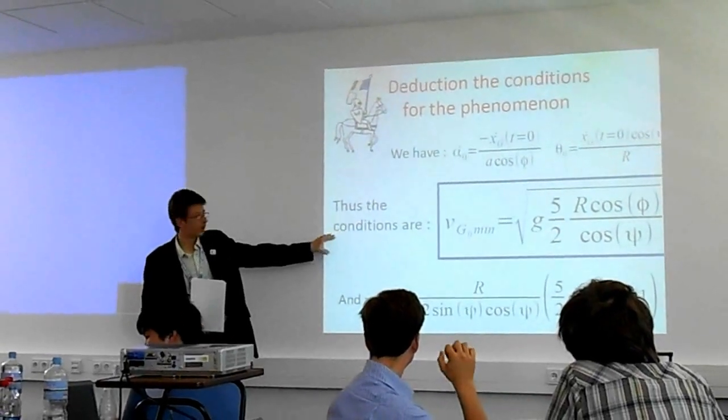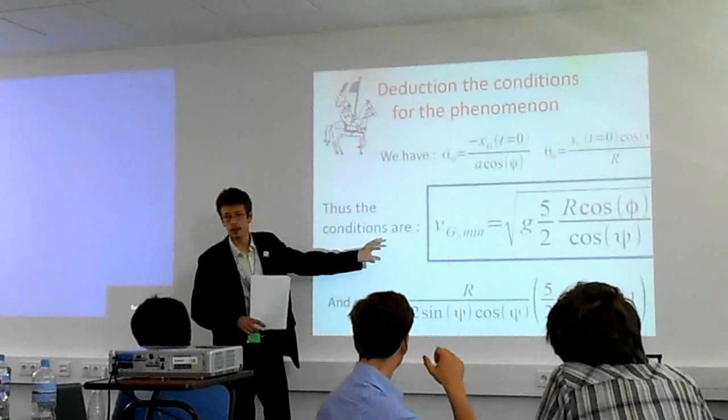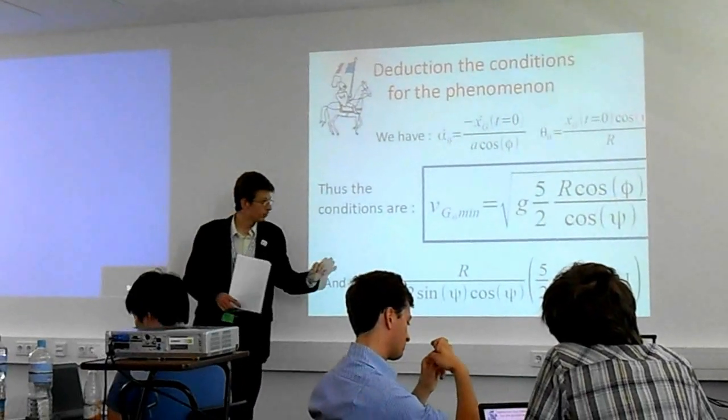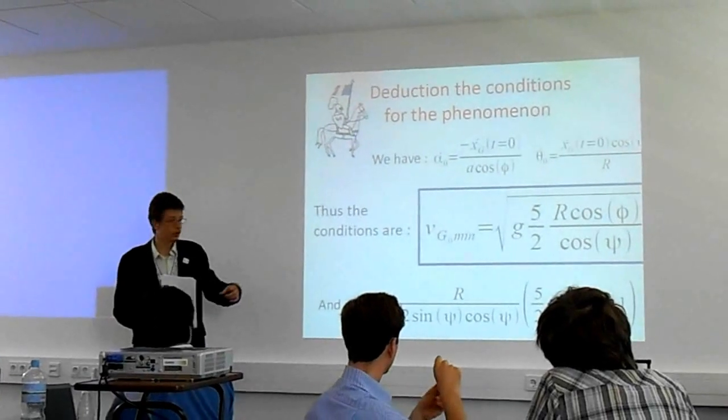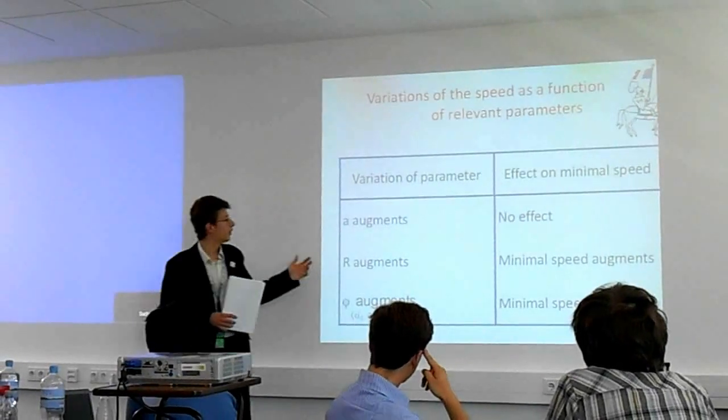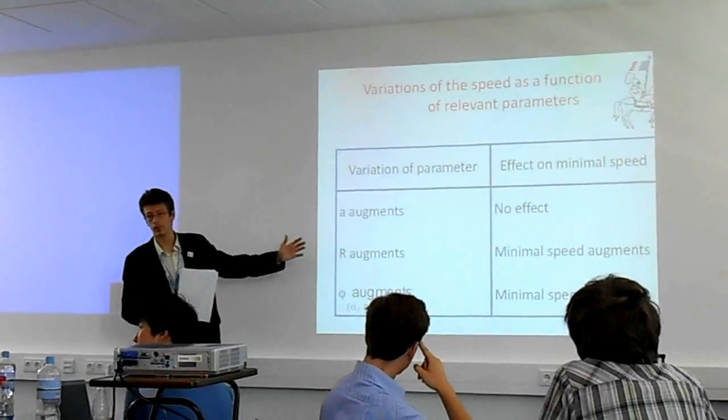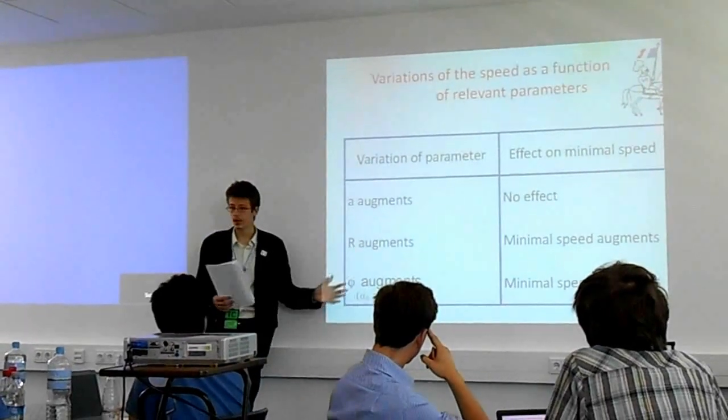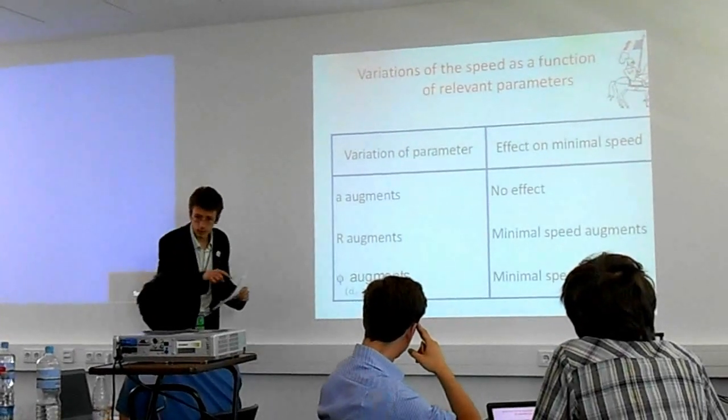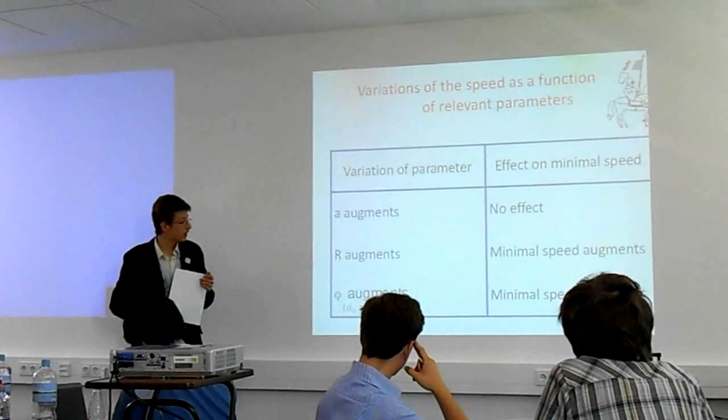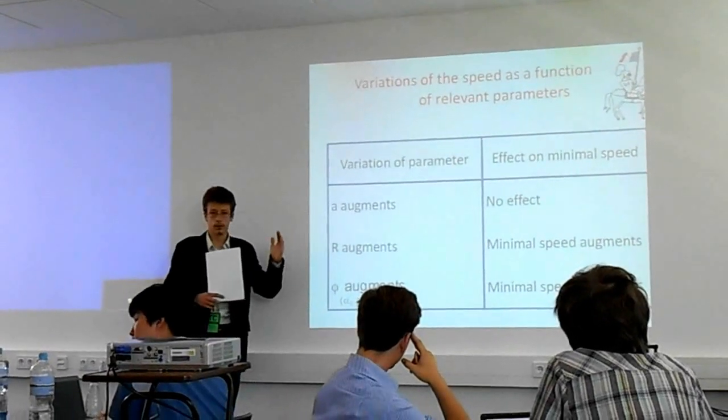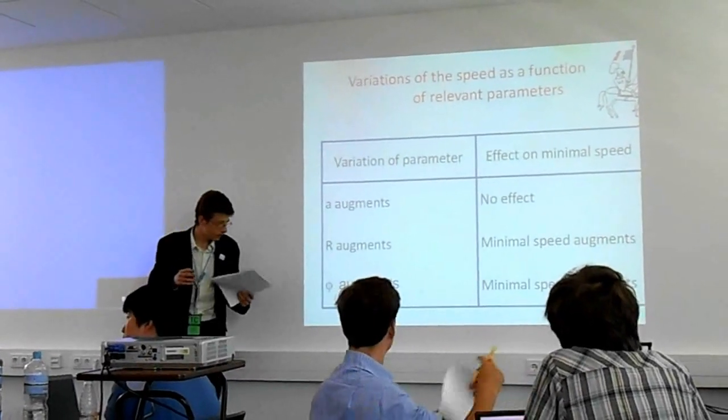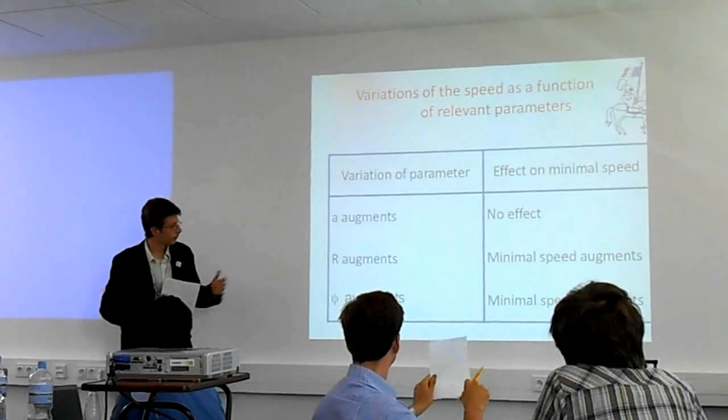From this formula, we see first of all that the radius of the ball is not intervening at all in the formula. Only R, which means the radius of the hole, is intervening, which is interesting to be noted. We can have here the variation of different parameters and the effect on the minimum speed. If A augments, there is no effect. If R augments, the minimum speed augments, meaning that if we have a bigger hole, we will need more speed to travel around the hole and come out. If the angle of the rail augments, the minimum speed augments too.